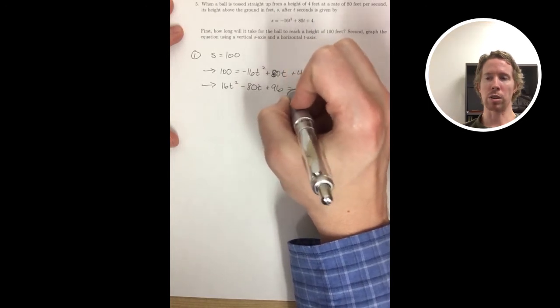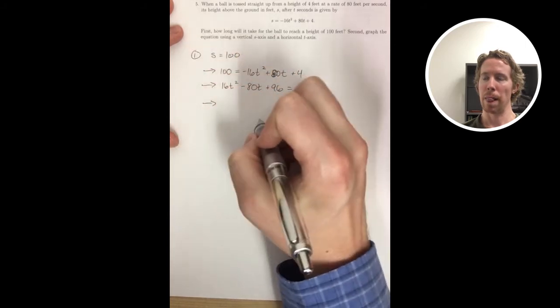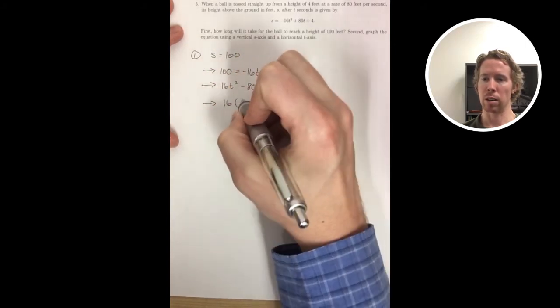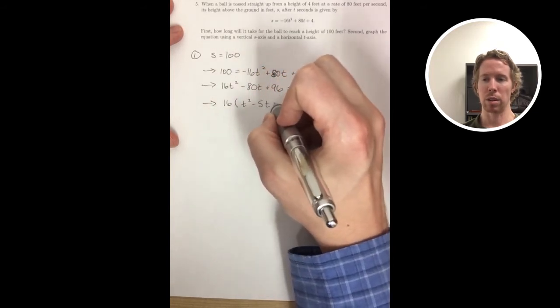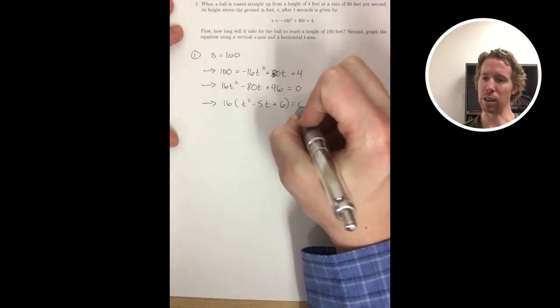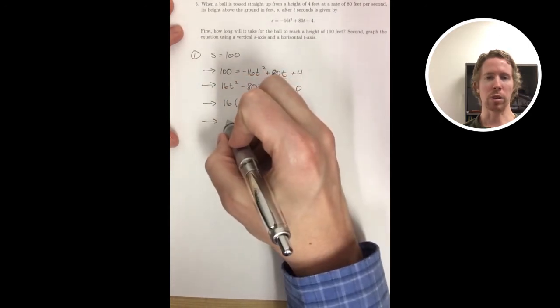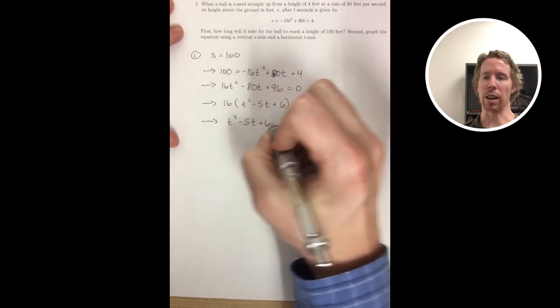This is a quadratic equation, so what you want to do is move everything over to one side. So I moved everything over to the left side here. And then I see that I can factor out something from each of those terms. It may not be obvious at first, but it turns out you can factor out a 16 from each term. So I'll do that and divide both sides by 16. Then I want to factor if I can.